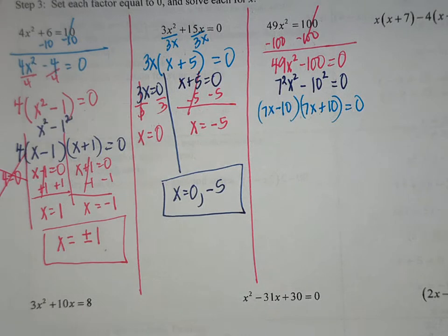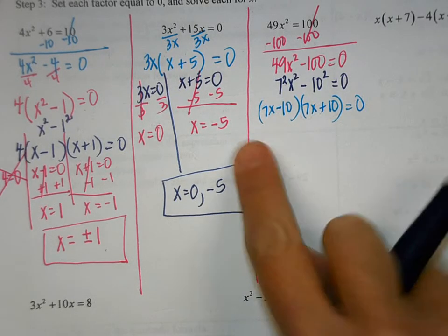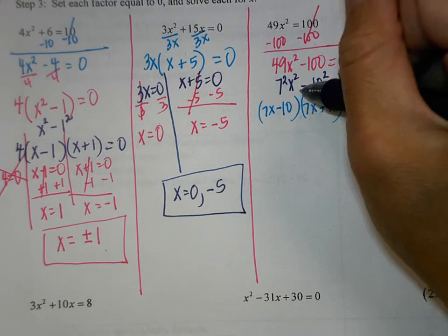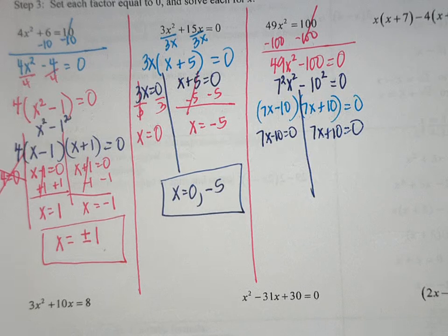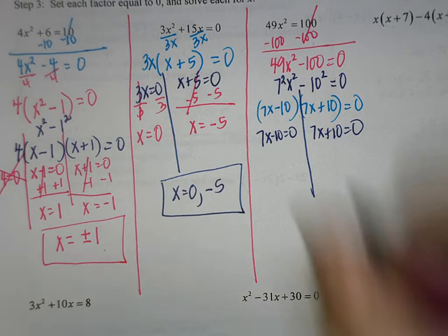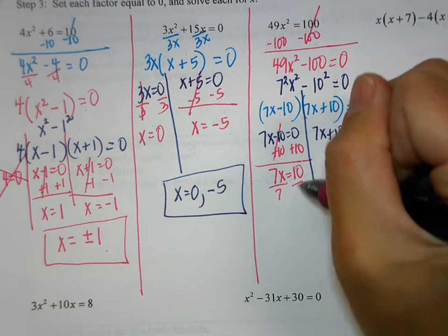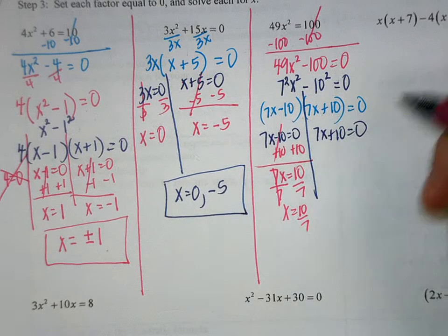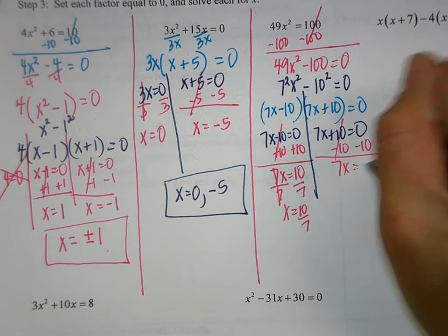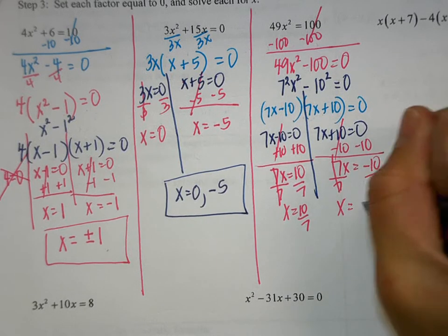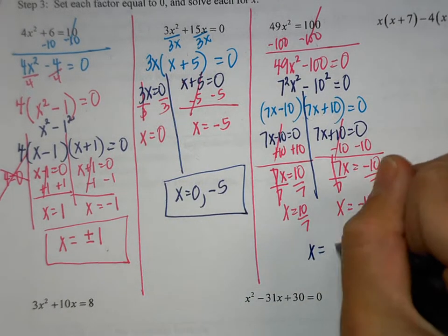Can I factor those any further? No — there are no squared terms in here, and 7 and 10 don't have anything in common. So we set each of our factors equal to 0: 7x minus 10 equals 0 and 7x plus 10 equals 0. Add 10 to both sides: 7x equals 10, then divide by 7, so x equals 10 over 7. Subtract 10: 7x equals negative 10, divide by 7, so x equals negative 10 over 7. You can write this as x equals plus or minus 10 over 7.